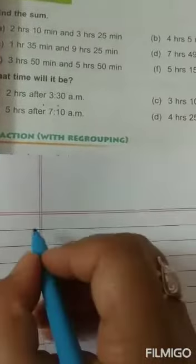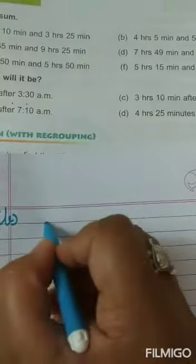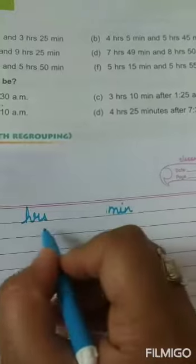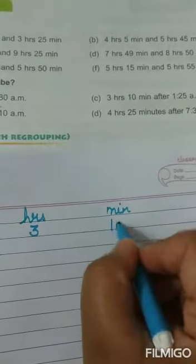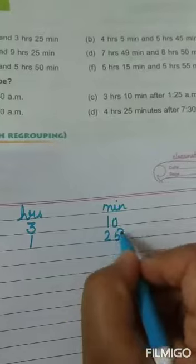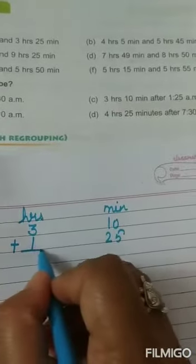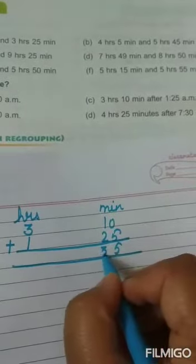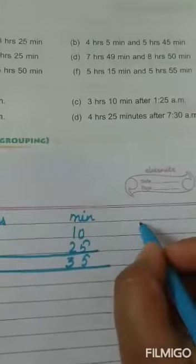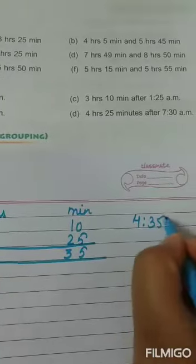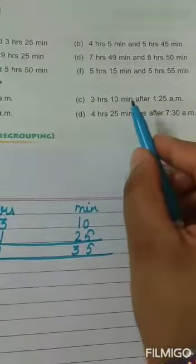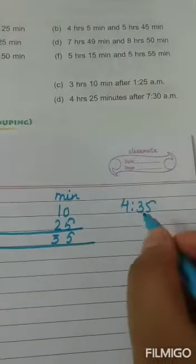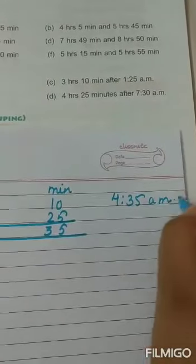Then B part: 3 hours 10 minutes after 1:25 A.M. After है, means plus करना है। 5 plus 0 is 5, 2 plus 1 is 3, 3 plus 1 is 4. So time आया 4:35. 1:25 A.M. था सुबह का, और 3 hours 10 minutes के बाद 4:35 हुआ, तो यह भी A.M. रहेगा।